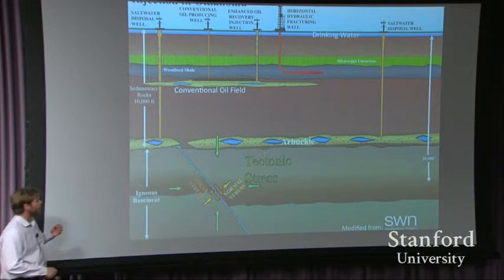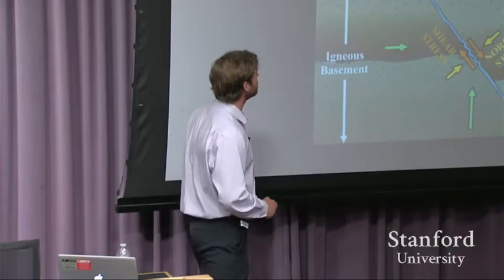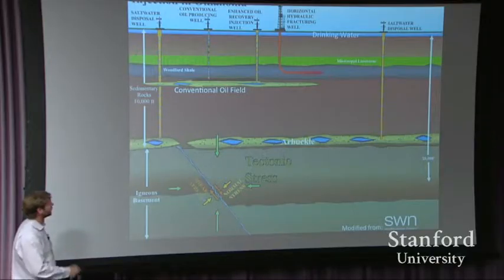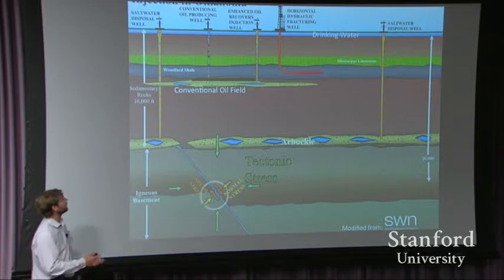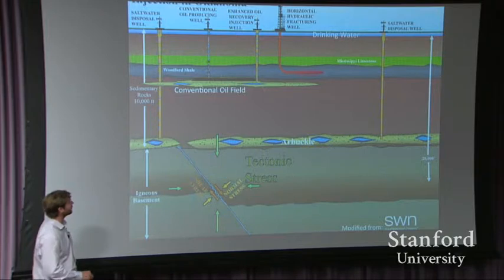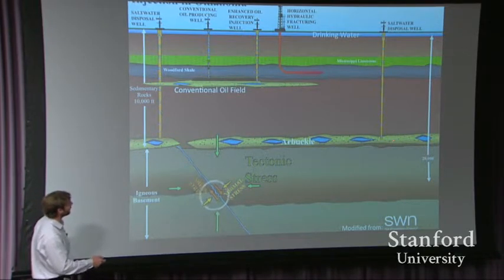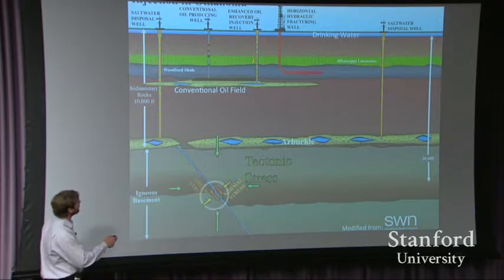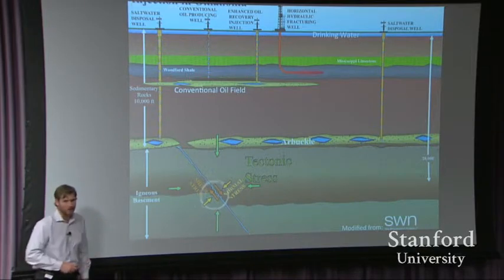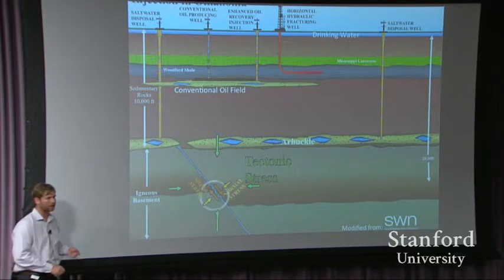Also in Oklahoma, there's another kind of well — enhanced oil recovery injection wells. In that case, you have an old oil field producing both oil and water; they skim off the oil and dispose of the water down an enhanced oil recovery injection well or a saltwater disposal well. Two important distinctions: first, saltwater disposal wells are generally injecting into deeper formations in Oklahoma. Second, in enhanced oil recovery the fluid flows in a circle — a cyclical flow — whereas with saltwater disposal you're just pumping water into the formation without producing anything from it. It's easy to imagine that pressurization is more likely when you're not producing anything from the formation.